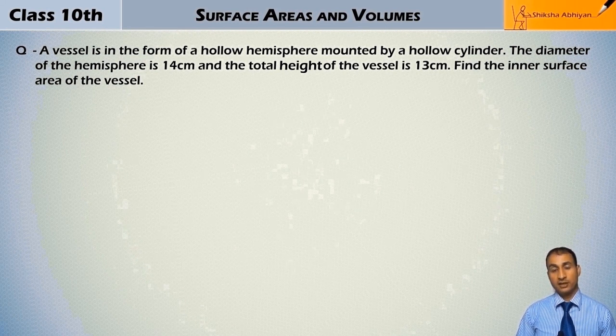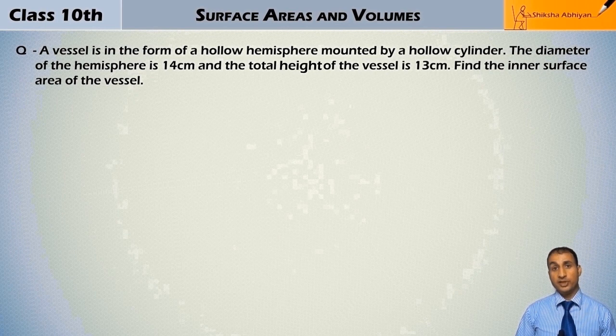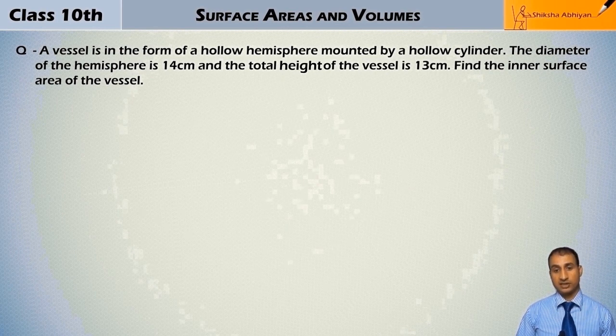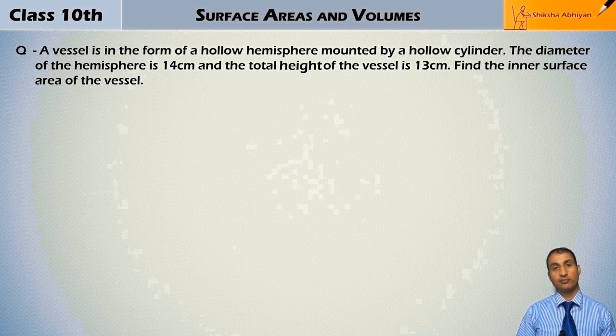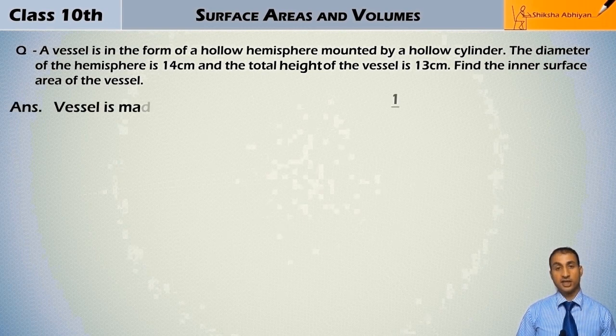Here, a vessel consists of a hemisphere and a cylinder. The total height is 13 cm and the diameter is the same, 14 cm. You can see the figure, and this figure is made up of a hemisphere of diameter 14 cm.